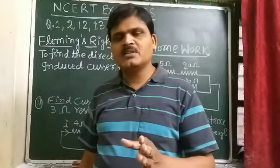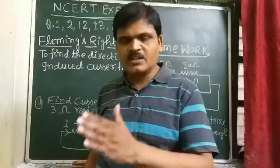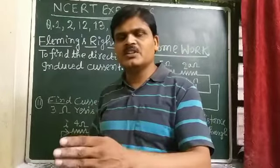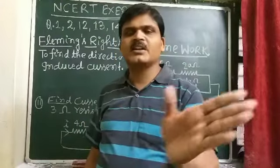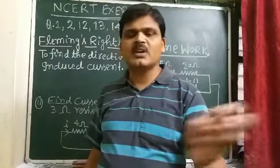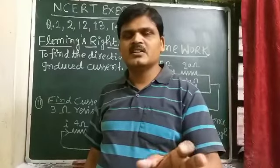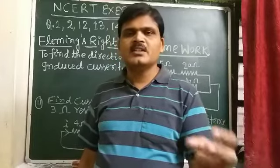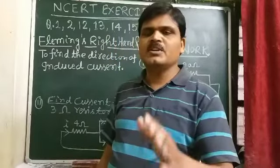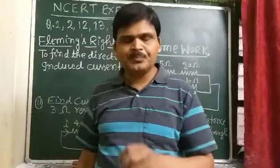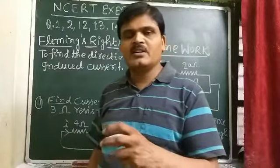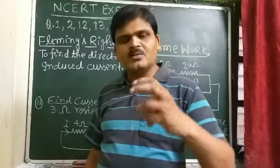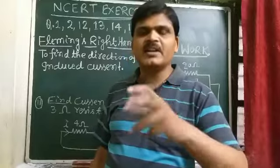So if magnetic flux changes — either due to relative motion between the bar magnet and the coil, or due to a change in current in the primary coil causing magnetic field lines passing through the coil to increase or decrease — in all cases, if the magnetic flux linked with the coil changes, there will be generation of induced current. Induced current can also be produced when the coil is rotating in a magnetic field.